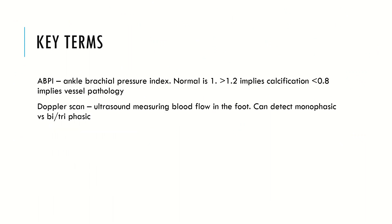Key terminology: ABPI stands for ankle brachial pressure index. A normal value is 1. It's calculated by putting a blood pressure cuff on your ankle around your calf, measuring the blood pressure there, and comparing that to the blood pressure in your arm. If it's greater than 1.2, this implies calcification — it implies diabetes, which is a common cause of calcification. If it's less than 0.8, this implies vessel pathology because the blood pressure in your legs is less than the blood pressure in your arms, which implies the blood supply to your legs has a clot in it.